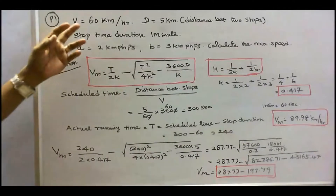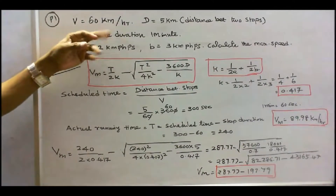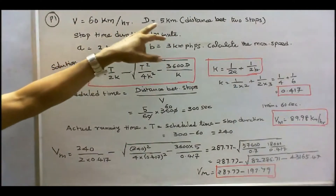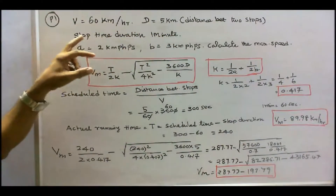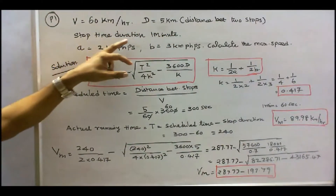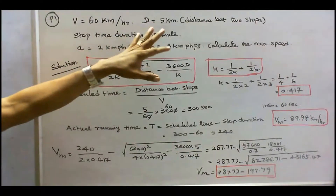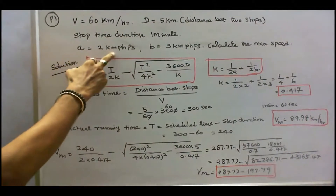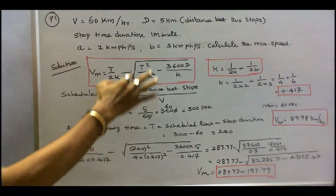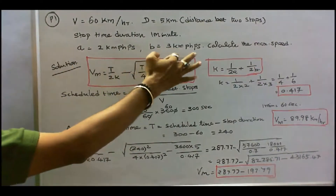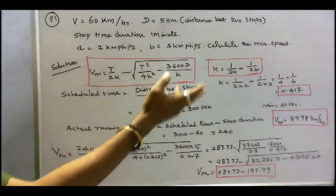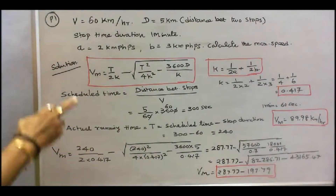In this problem, the average speed V is given as 60 km per hour, distance between two stops is 5 km, stop duration is 1 minute (60 seconds), acceleration is 2 km/h/s, and retardation is 3 km/h/s. We have to calculate the maximum speed of the train.